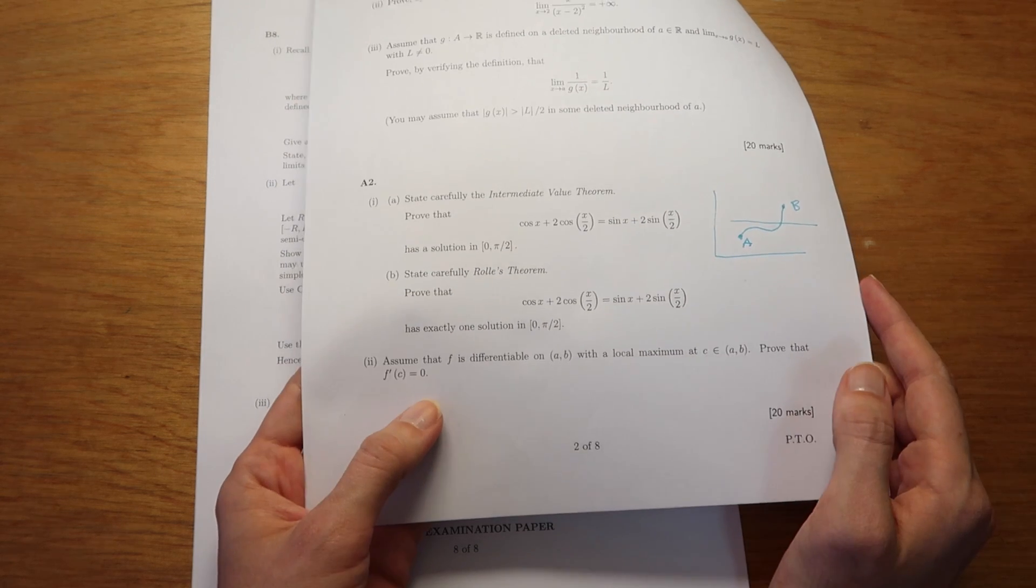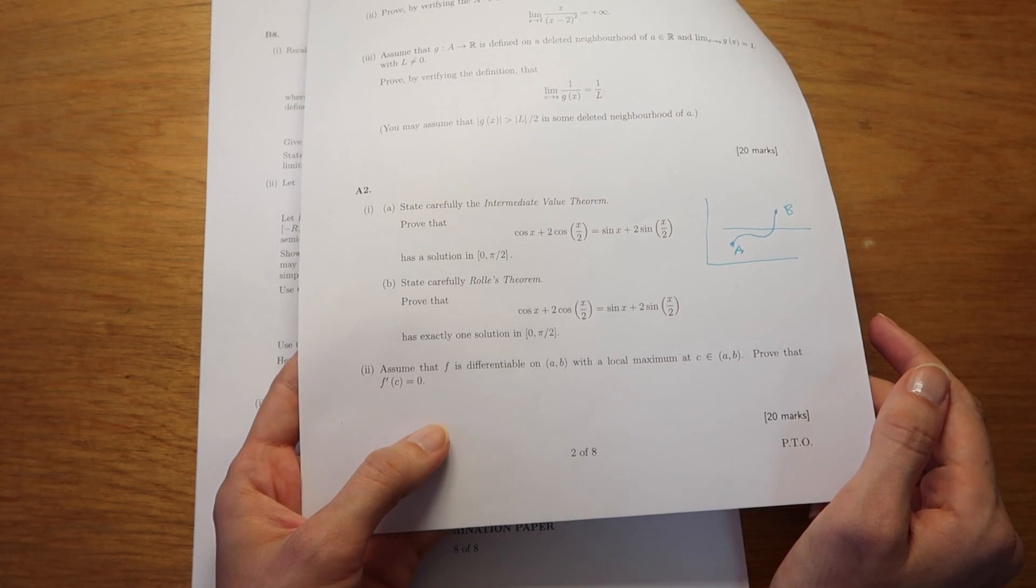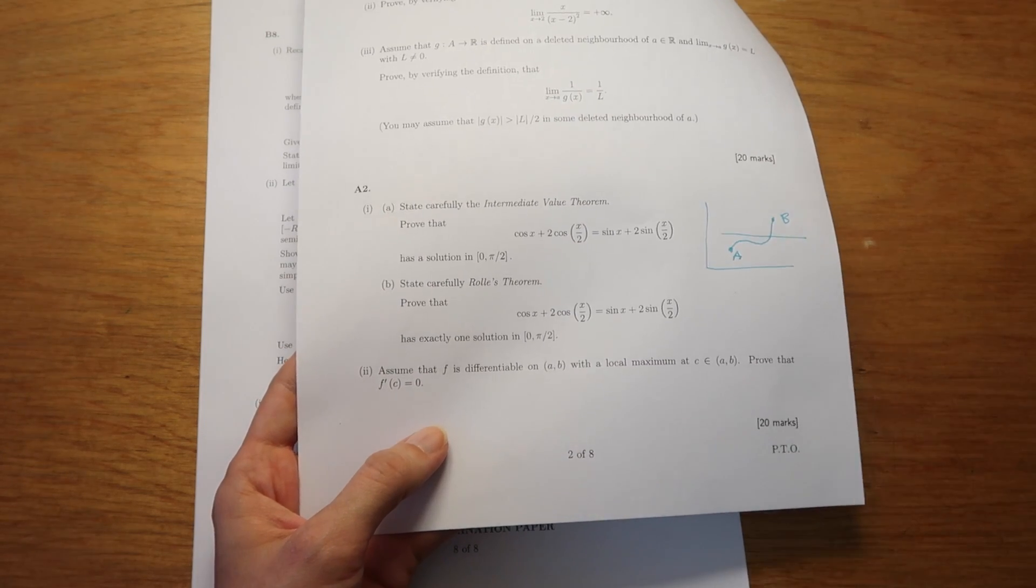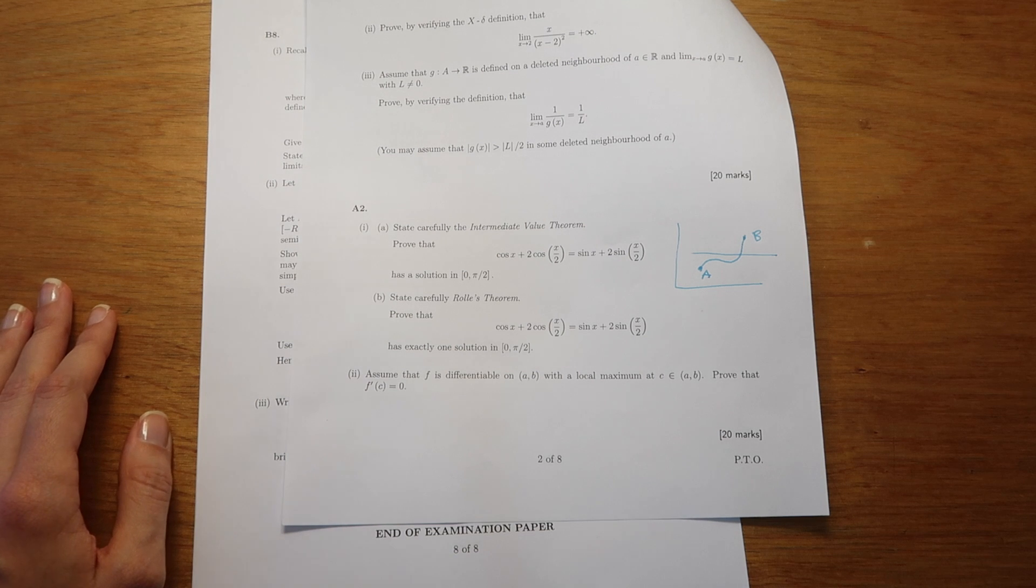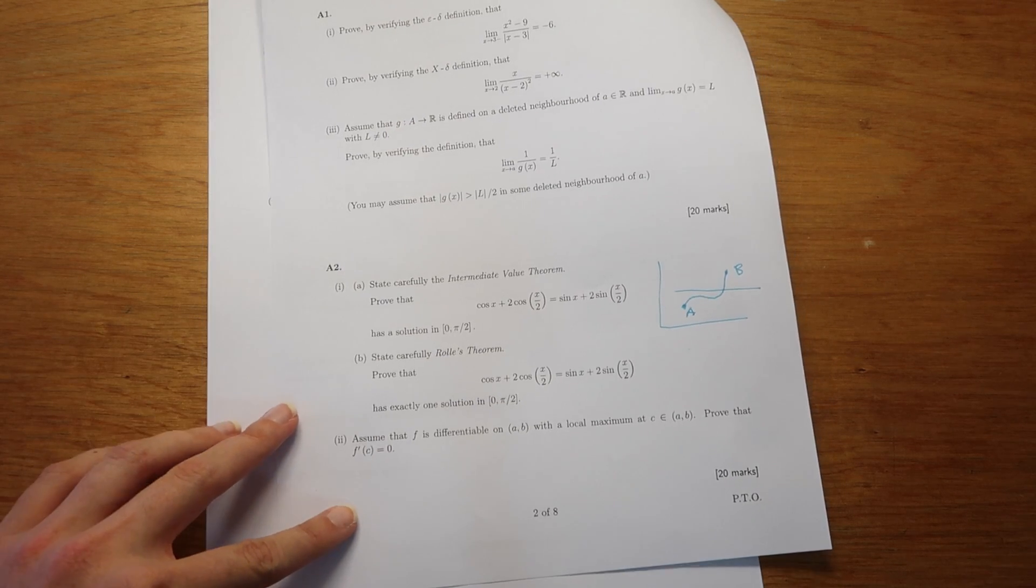So really you're proving that if a function has a local maximum that the derivative at that point is zero, and that's an idea that underpins a lot of calculus and optimization problems, but you're not often asked to prove it.